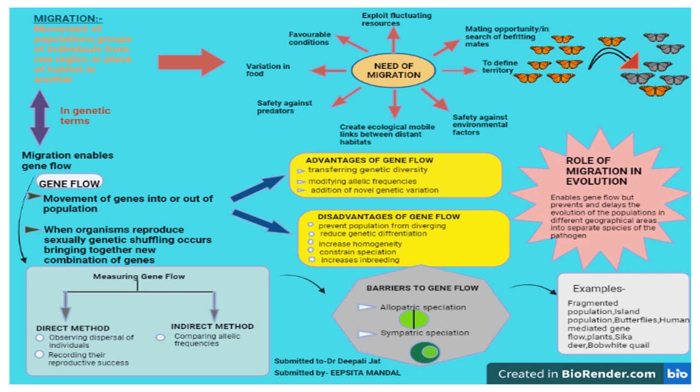The marine iguana is the only iguana that has evolved the ability to swim. Regarding human populations in Europe, Homo sapiens interbred with Neanderthals, resulting in gene flow between these populations. Human-mediated gene flow mostly occurs in the case of threatened species, in which humans attempt to induce gene flow in ex situ situations.